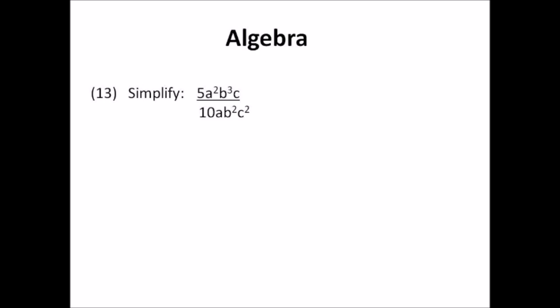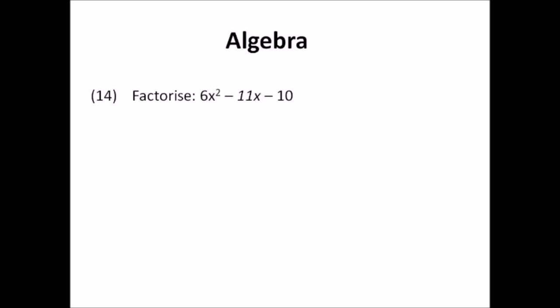Number fourteen: factorize 6x² minus 11x minus 10. Find the factors of 6 at the front — either 1 and 6, or 3 and 2 — and factors of 10 at the back — either 2 and 5, or 10 and 1. Use the cross method and cross multiply. The numbers must add to give negative 11 and multiply to give negative 10. This is trial and error — try the combinations until one works.